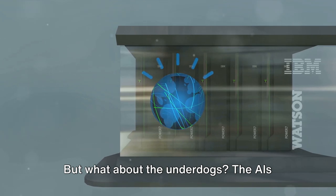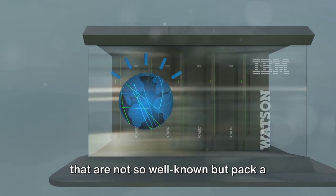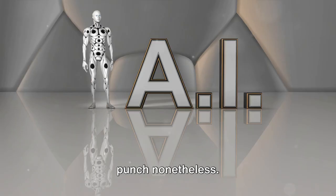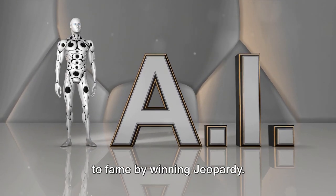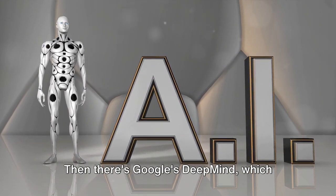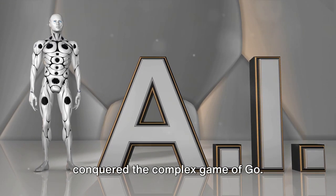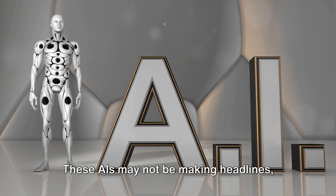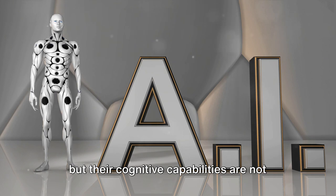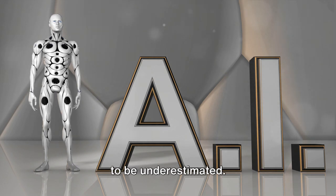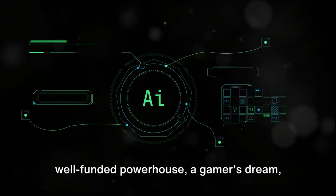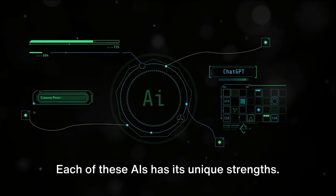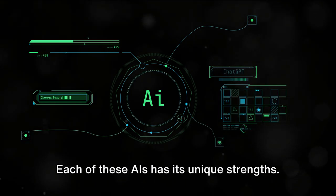But what about the underdogs? The AIs that are not so well known but pack a punch nonetheless. There's IBM's Watson, which shot to fame by winning Jeopardy. Then there's Google's DeepMind which conquered the complex game of Go. These AIs may not be making headlines but their cognitive capabilities are not to be underestimated. So we've got a persuasive chatbot, a well-funded powerhouse, a gamer's dream, and a couple of dark horses.